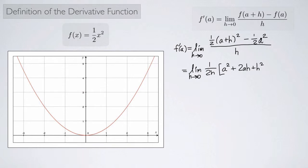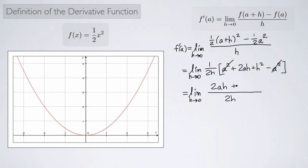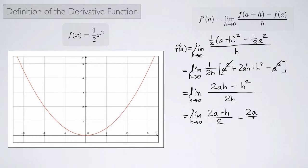Then we subtract a squared, since we already factored out the one half. The a squared terms cancel, leaving the limit as h approaches 0 of 2ah plus h squared over 2h. The h's cancel, giving us the limit as h approaches 0 of 2a plus h all over 2. Letting h go to 0, we get 2a over 2, which is just a. So the derivative at point a is a.